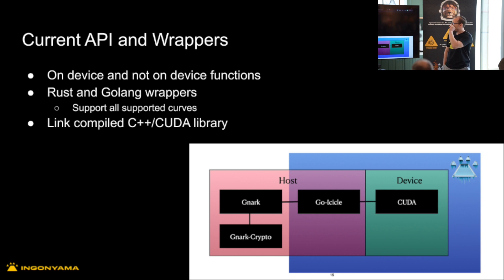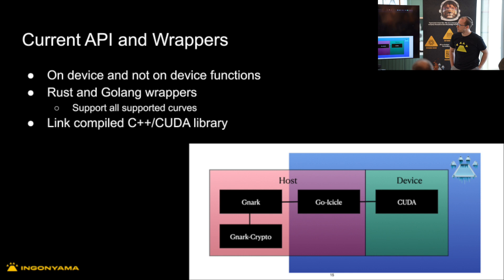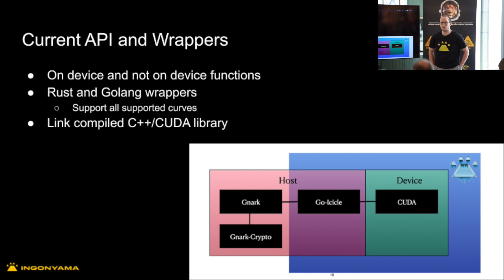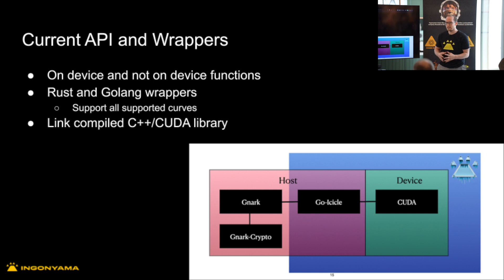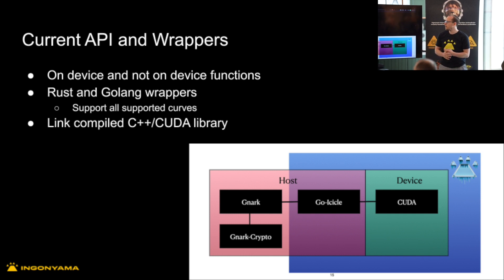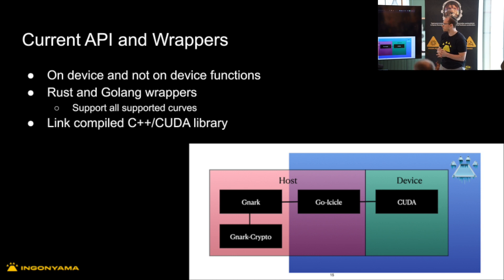The first bullet point here: on-device and not on-device functions. We currently have two separate APIs — one for using data that is already on the device, already on the GPU, and one that accepts data directly from the call. We are likely going in the direction of merging that into one single API, and then having a bunch of options in the API to allow you to choose which calls operate on what types of data or where that data resides.